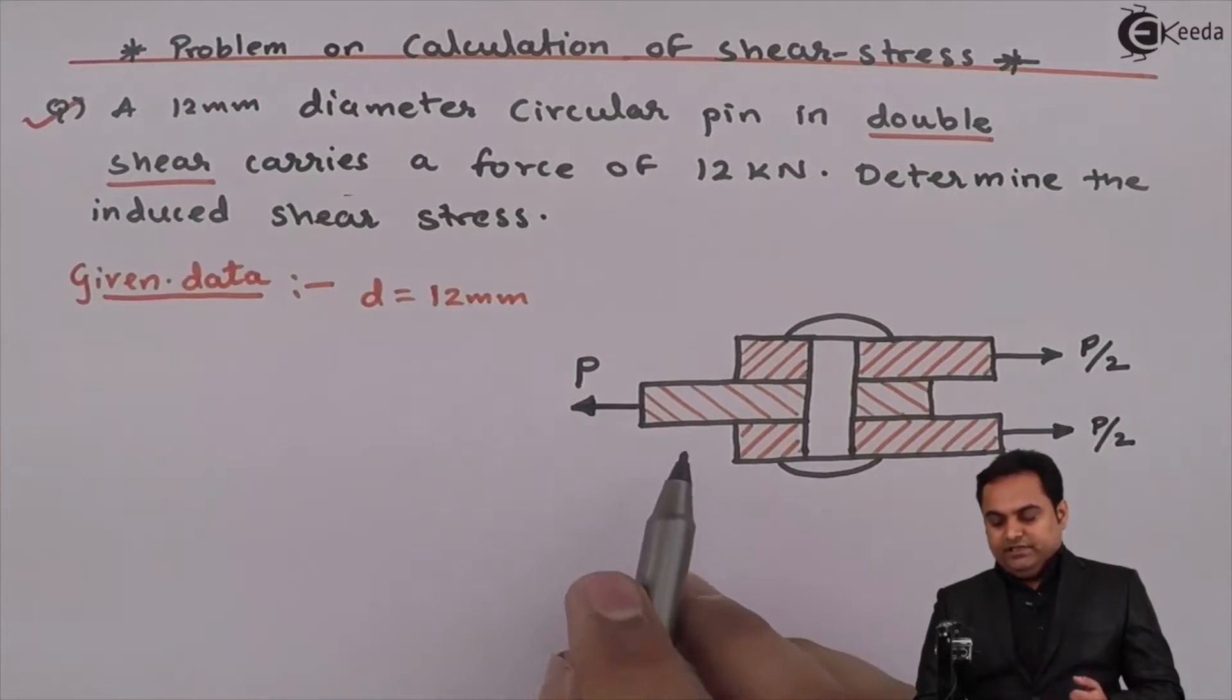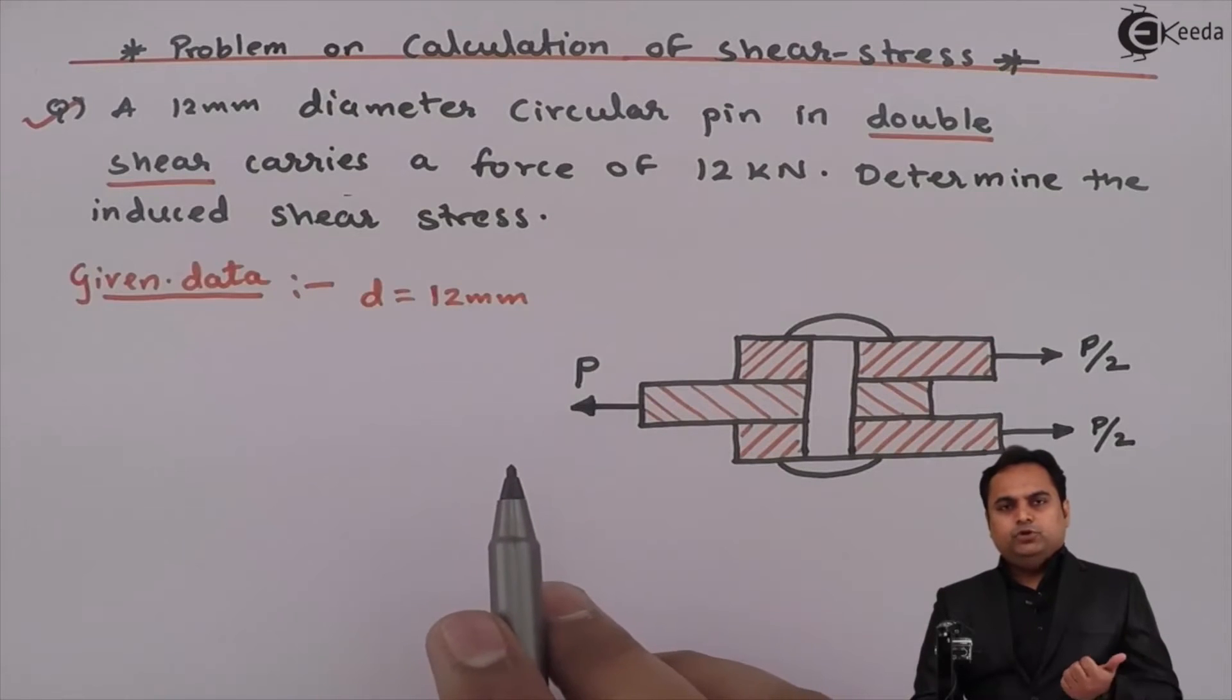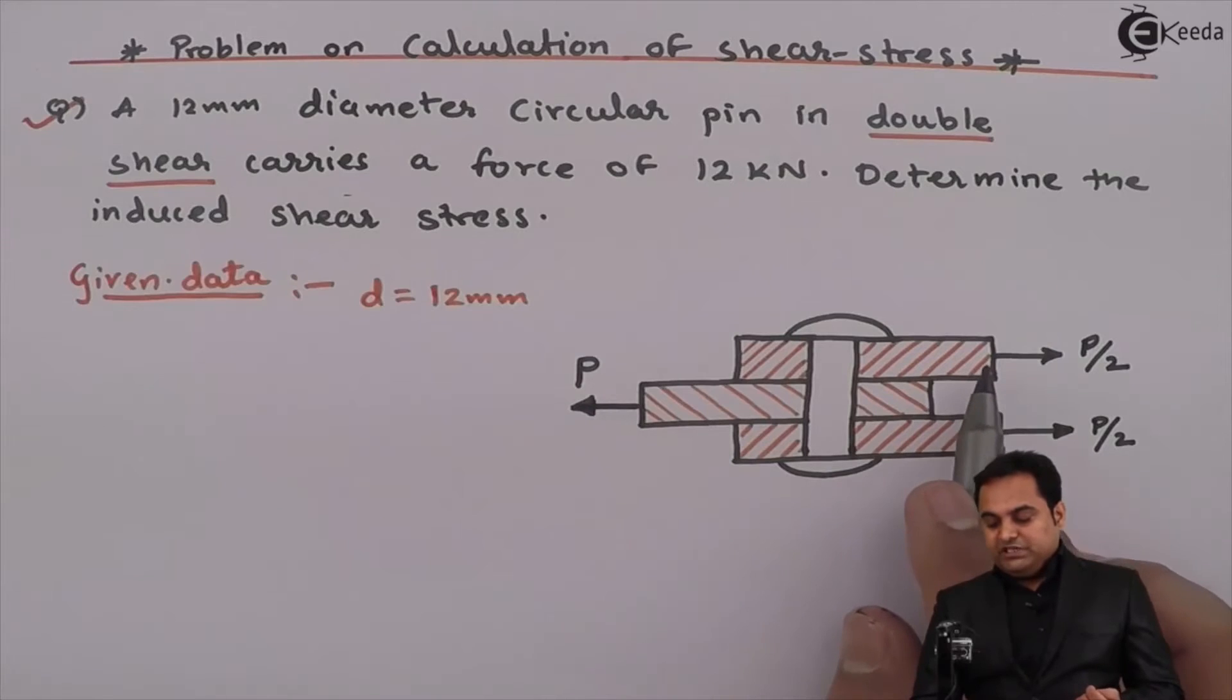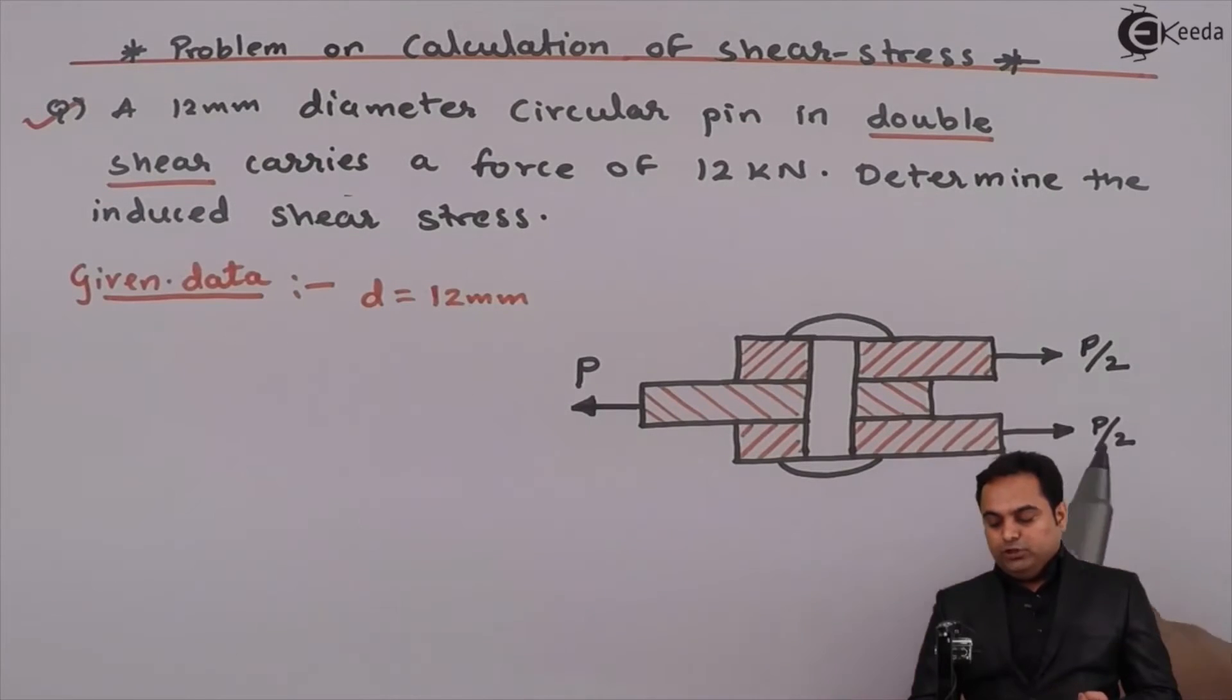So it is clear that from the diagram, middle plate is being pulled towards left with the help of force P. The plates which are at the top and bottom, they are carrying the load which is half of P. So they are trying to pull the plate towards right.